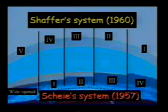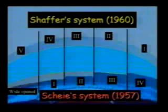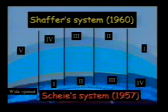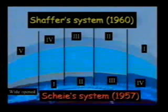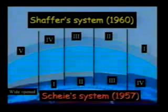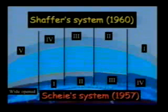Before that, Shaffer proposed another classification system. It is similar but the numbers are reversed: stage 5 is the closed angle while 0 is the open — the reversal of Schaeffer's system. So never use just gradings by numbers; it's better to write down whether it's open, partially open, or closed, or better to write down which structures are visible.